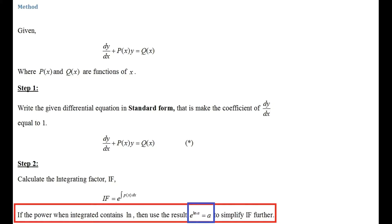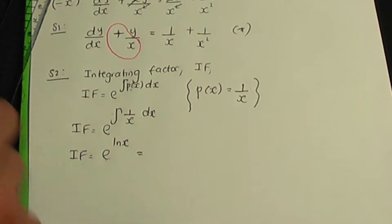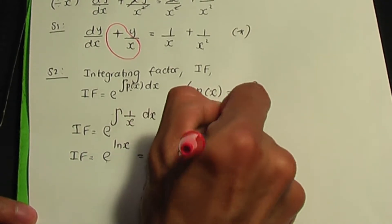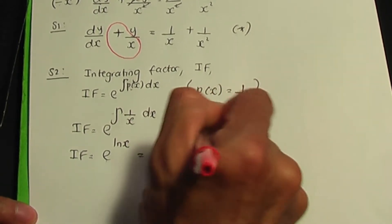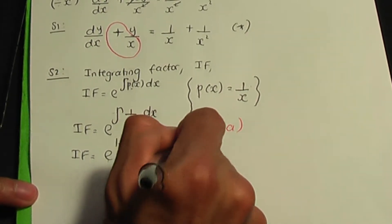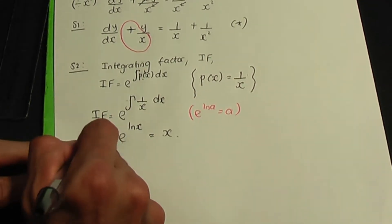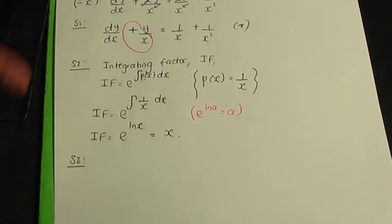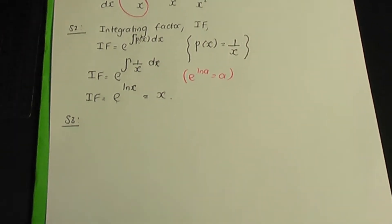Remember, if you have ln as part of your power of e, go one stage further. Using the result e to the ln a equals a, we get e to the ln x equals x. So our integrating factor is x. This takes us to step number three: multiply the equation in standard form, i.e. star, by the integrating factor IF.